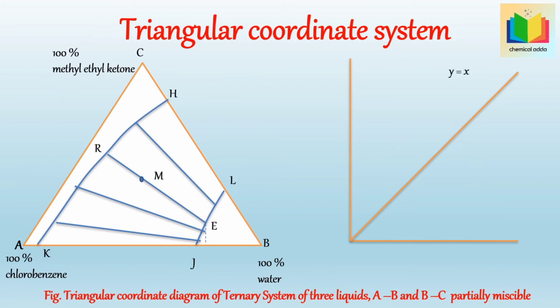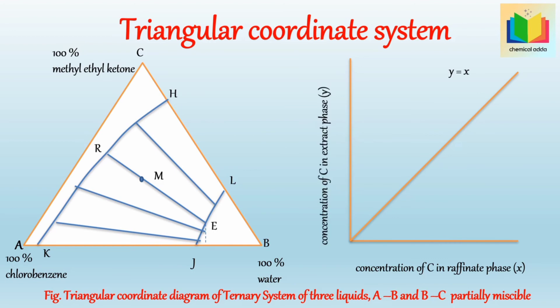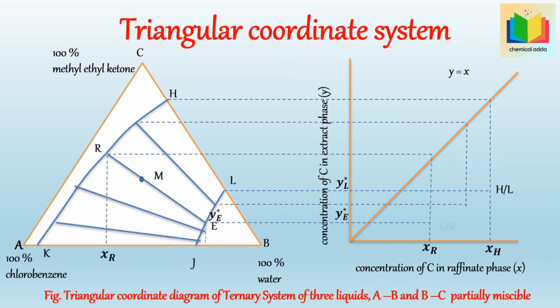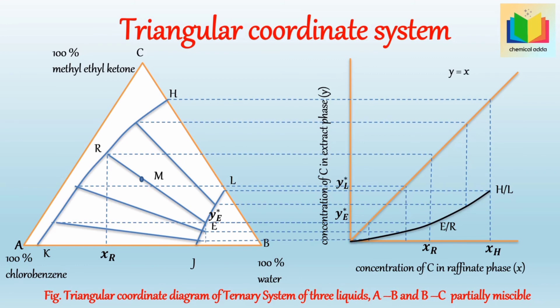The concentration of C at the ends of tie lines, when plotted against each other, a distribution curve is obtained. On the X axis, the concentration of C in the raffinate phase, that is the saturated chlorobenzene phase, is plotted. On the Y axis, the concentration of C in the extract phase, that is the saturated water phase, is plotted. If we interpolate the endpoints of tie lines, we get a distribution curve. As the concentration of C in the raffinate phase is more, the distribution curve lies below the diagonal.